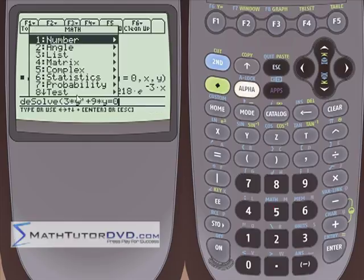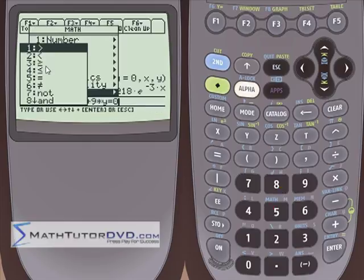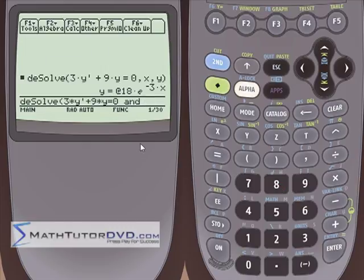So, go to the math menu. Test. Section 8 is a test. This is where you have your greater than, less than, equal to. Well, there's also an AND there. You'll understand in a second. So, we have this differential equation, AND we have to put our initial condition.